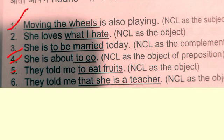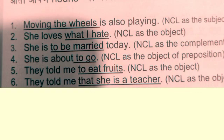Now look at sentences 1, 3, 4 and 5. In these sentences, non-finite verbs are used: 'moving,' 'to be married,' 'to go,' and 'to eat.' These clauses are called non-finite clauses because they are introduced with the help of non-finite verbs. While in sentences 2 and 6, the verbs 'hate' and 'is' are used — these are finite verbs, so those clauses are finite clauses.